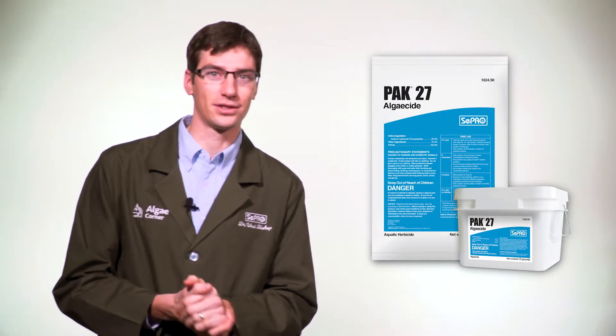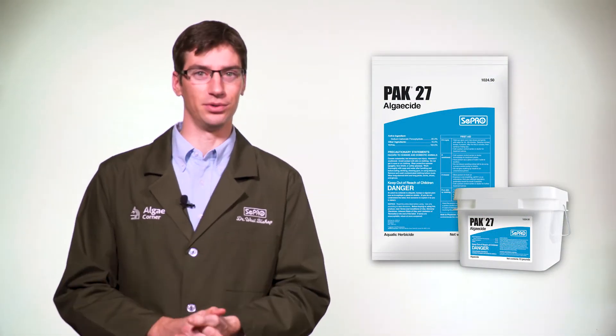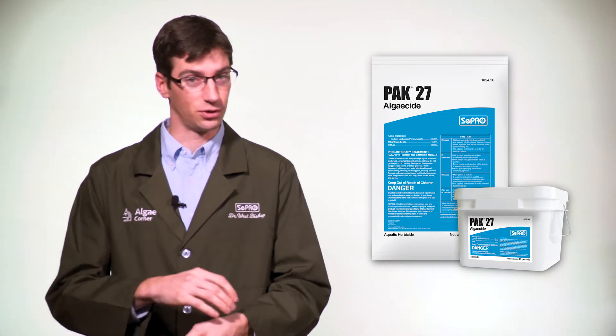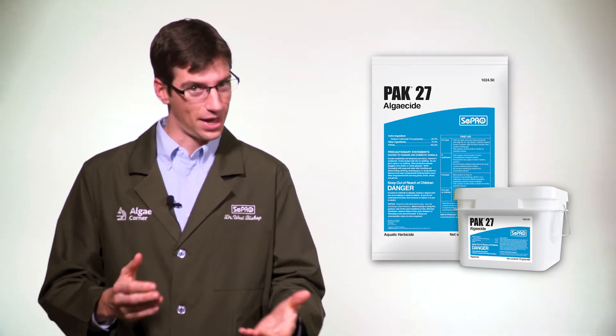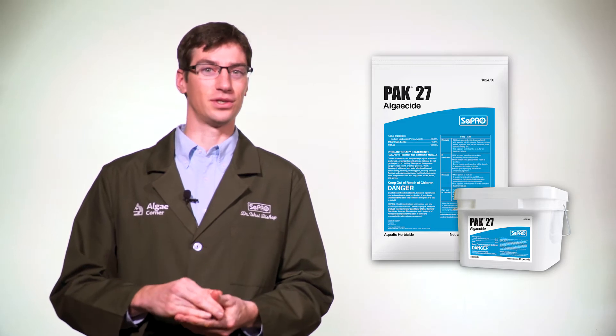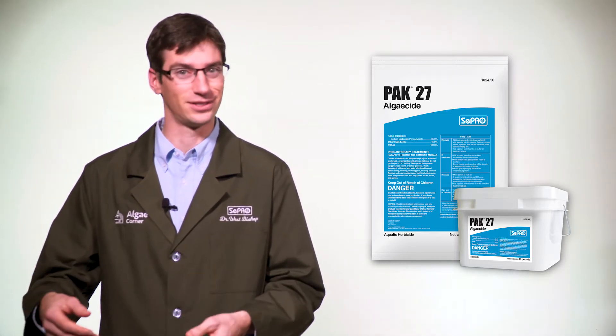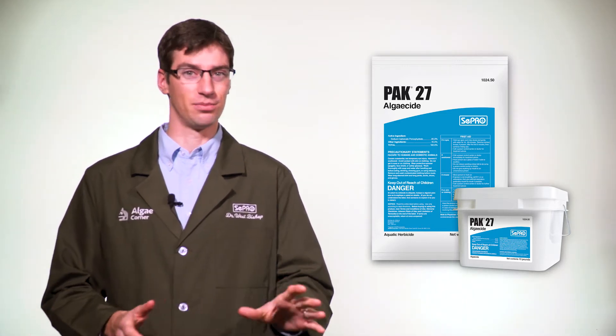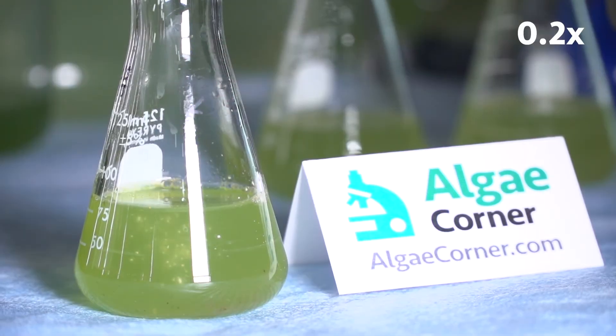So a lot of people already use peroxide. They put it on cuts, for example, to kill the bacteria on your skin. Well our version of peroxide, PAC27, is designed for use to control nuisance cyanobacteria and other bacteria and some other forms of nuisance algae in your pond or lake.